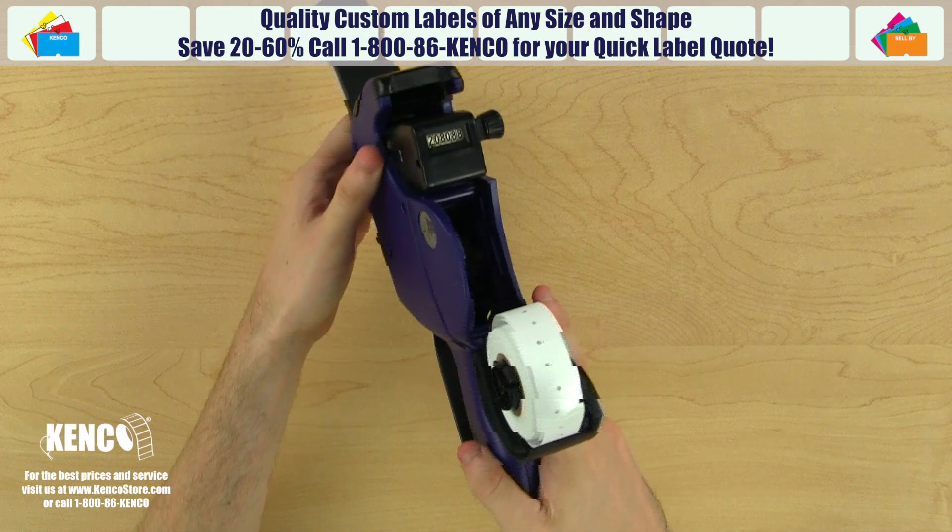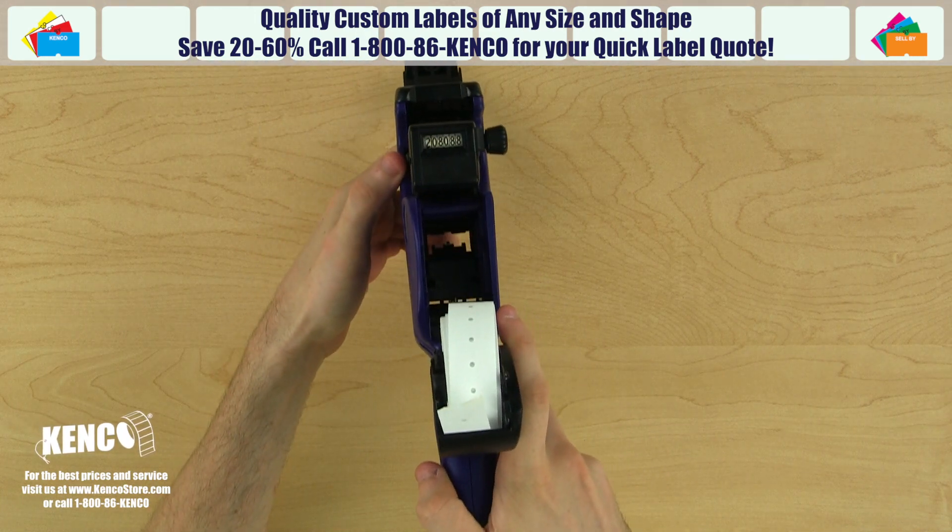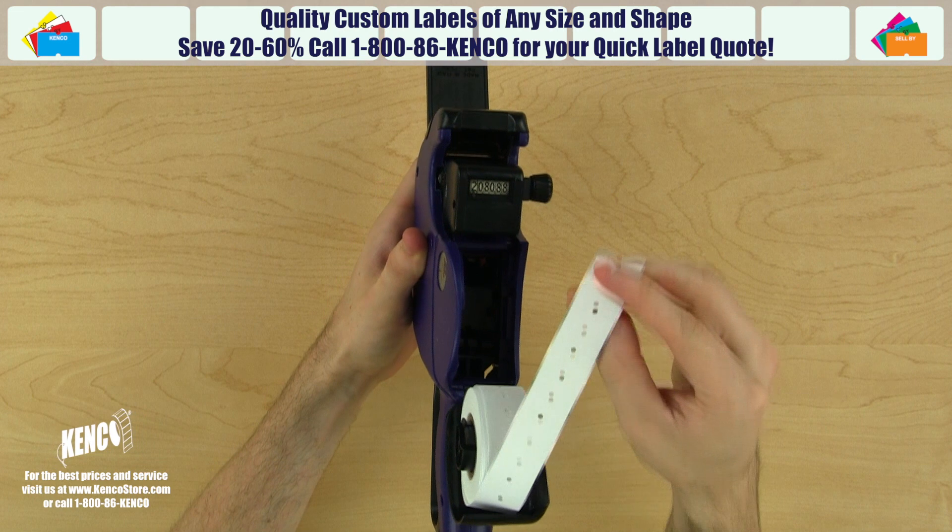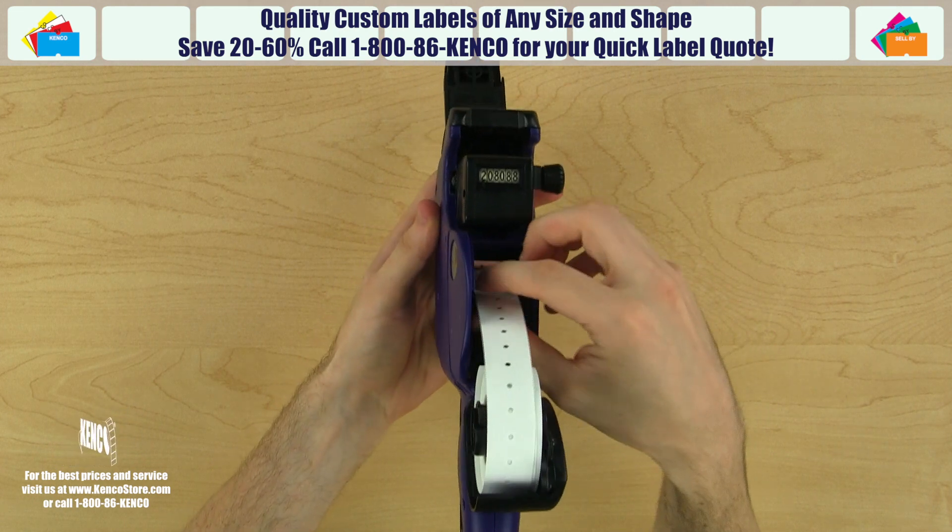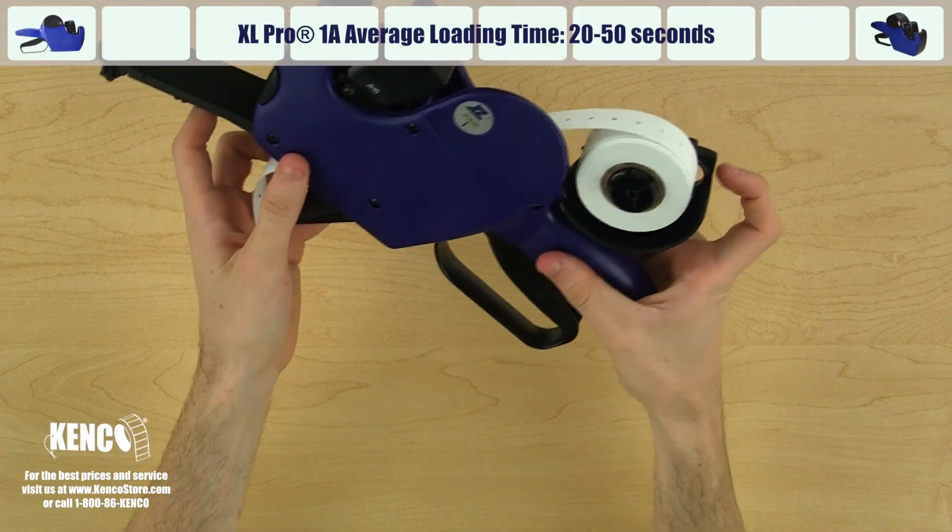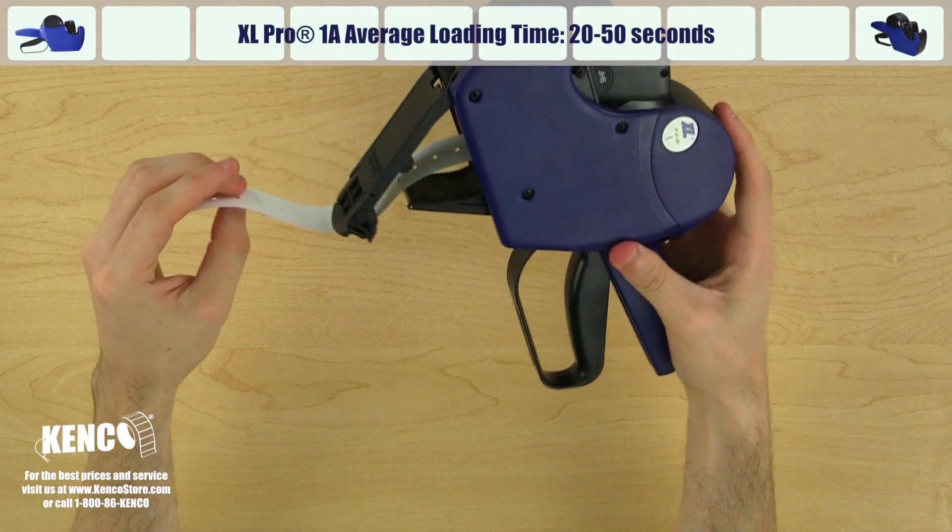With all three doors open, you should be able to see the path through the center of the gun above the advancing mechanism. Begin feeding the labels into the rectangular cavity below the blue bar. Pull about three to four inches through, then close the label housing cover to secure the labels.